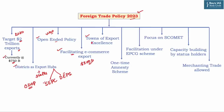Then comes the Towns of Export Excellence. Under this policy, the government has announced four new cities — Faridabad, Mirzapur, Moradabad, and Varanasi — as part of Towns of Export Excellence, adding them to the already existing 39 towns. These cities will get access to export promotion funds and will be treated as priority cities, receiving more funds than non-program cities for export promotion. For example, a city under this program might get 100 crores while a non-program city might get only 10 crores.